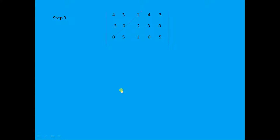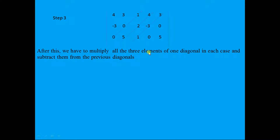Now we take three up diagonals. Again, three elements are left on the left-hand side and three on the right-hand side. We multiply all three elements of each up diagonal, as we did for the down diagonals, and then subtract them from the down diagonal result.